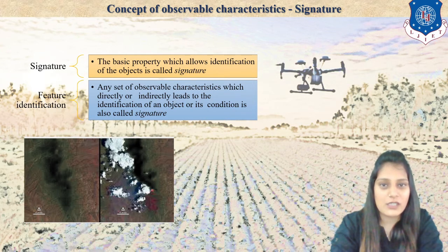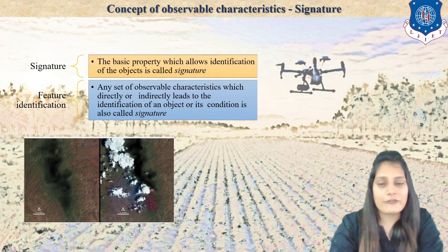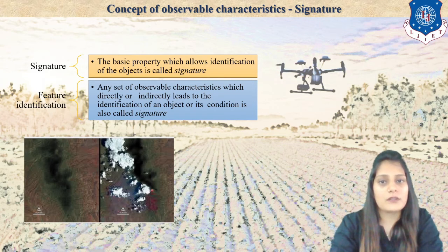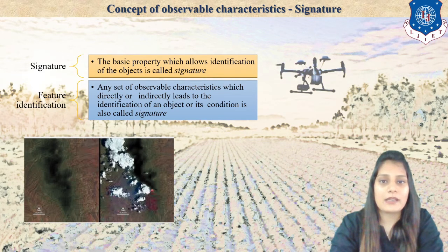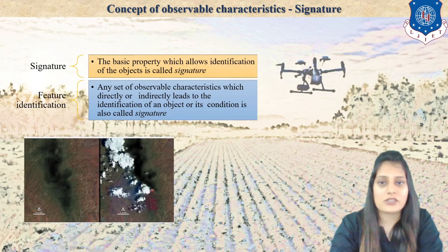The basic property which allows identification of an object is called its signature. For each feature there are various signatures — for the cloud, the shadow is the signature. You can also see brown color, green color, and blackish color. These are the things which fit the feature identification patterns. With pattern, texture, and feature extraction we can know the signature of each feature.